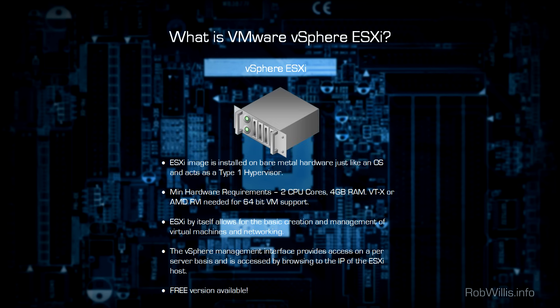So what is VMware vSphere ESXi? We'll download the ESXi image directly from VMware and it's going to be an ISO image. We'll install that on top of bare metal hardware just like any other operating system, and it's going to act like a type 1 hypervisor. Unlike running VMware Workstation where you boot into Windows or Linux and then open VMware Workstation, this is an operating system purely for running virtual machines.